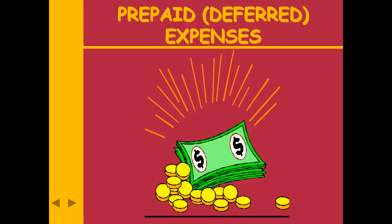Every adjusting entry either debits an expense or credits a revenue. The other side of that entry is always a balance sheet account — an asset or a liability, although there is one new one we'll introduce today. An adjusting entry never affects one account: cash. It never affects cash.